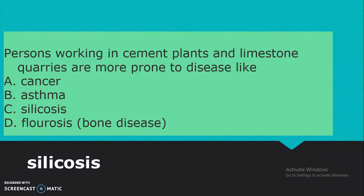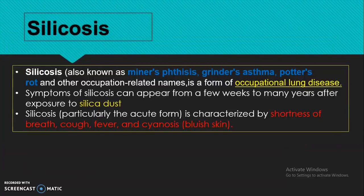Persons working in cement plants and limestone quarries are more prone to diseases like cancer, asthma, silicosis, and fluorosis — the answer is silicosis. Silicosis is a form of occupational lung disease, also called miner's phthisis, grinder's asthma, or potter's rot. It is due to exposure to silica dust for many years, and is characterized by shortness of breath, cough, fever, and cyanosis.